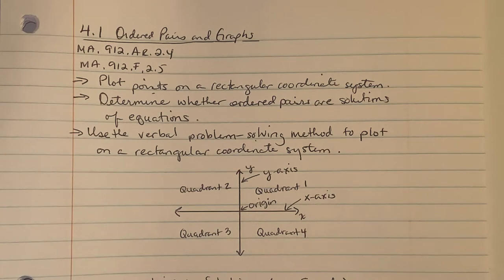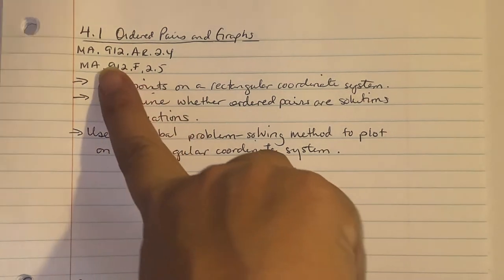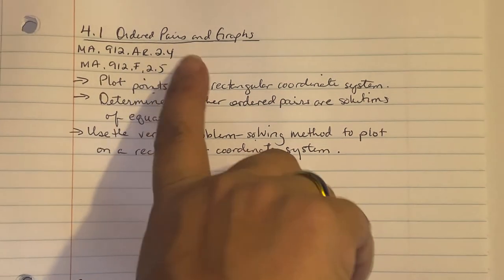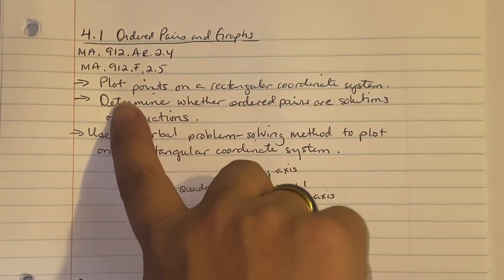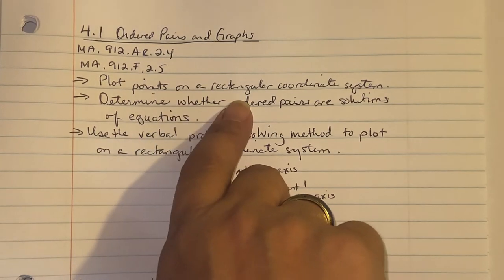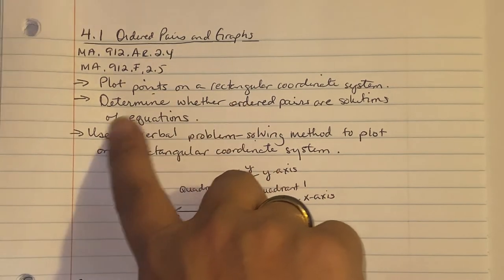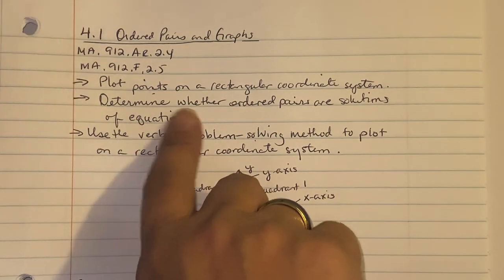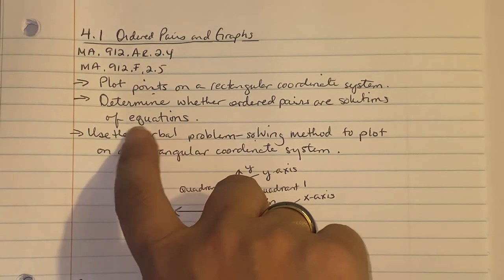Section 4.1: Ordered Pairs and Graphs. We're going to plot points on a rectangular coordinate system, determine whether ordered pairs are solutions of equations, and use the verbal problem solving method.